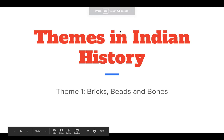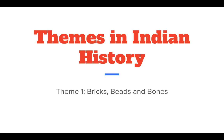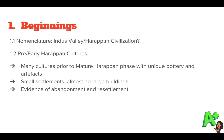Hello and welcome back to high school history. Starting today I'm going to try and cover all the chapters of your class 12 curriculum themes in Indian history. We will start today with theme 1 which is called Bricks Beads and Bones, which deals with the Harappan civilization. The chapter begins with a quick discussion on how we name the civilization — for the longest time it was called the Indus Valley civilization because most of the early sites were found along the River Indus, but scholars have now mostly chosen to call it the Harappan civilization.